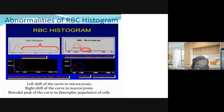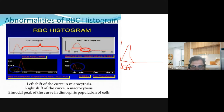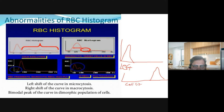Let's talk about the abnormalities in your RBC histogram. We have a shift to the left and a shift to the right. A shift to the left means the RBC Gaussian bell curve rises on the left side. A shift to the right means it rises on the right side. Remember, we're talking about cell size — the peak should fall within 80 to 100 femtoliters to be considered normocytic.